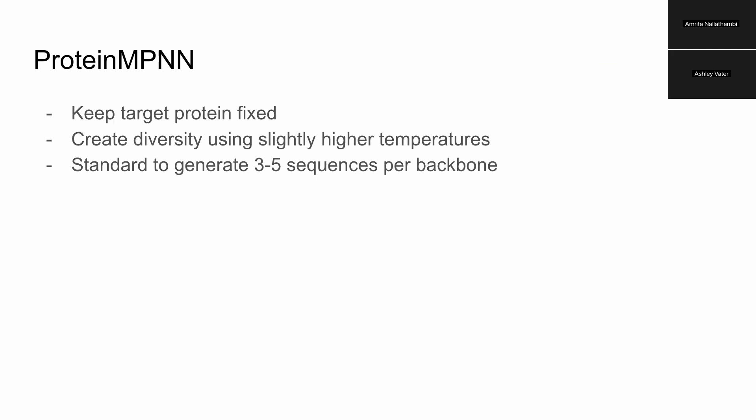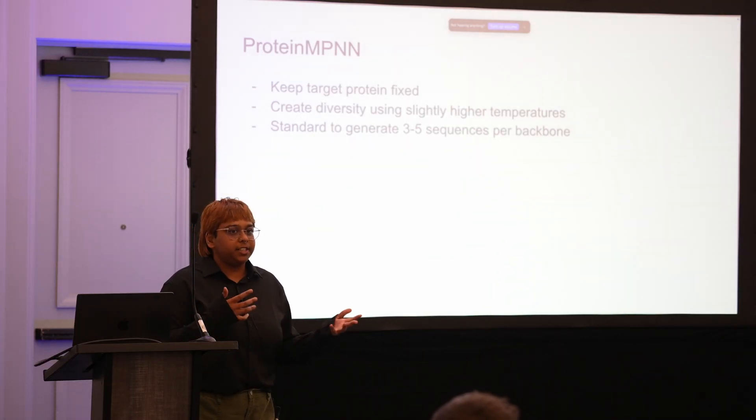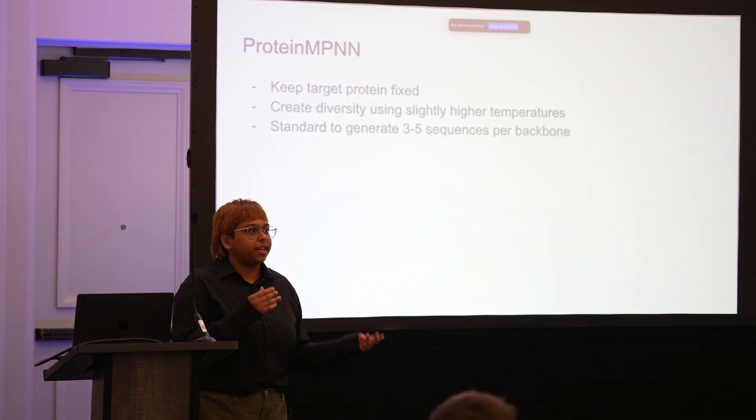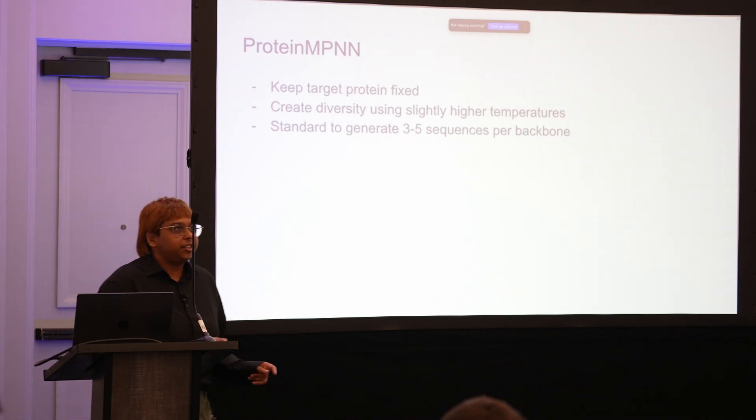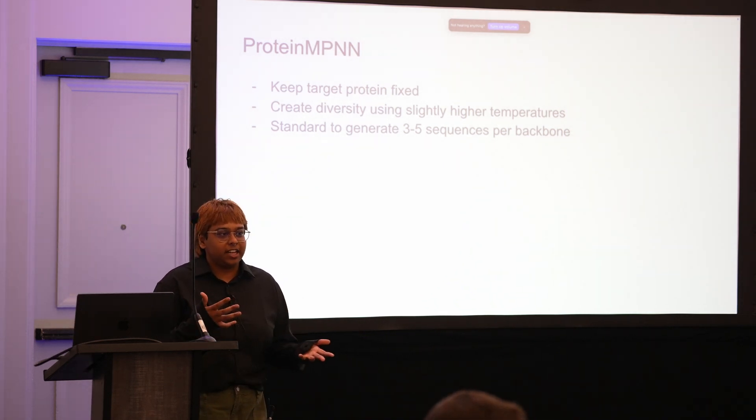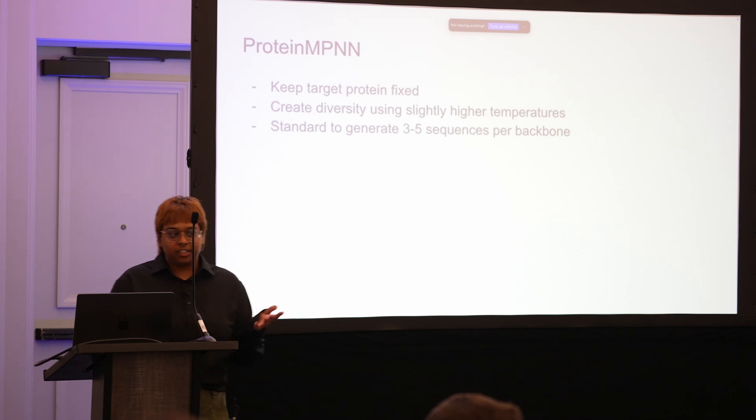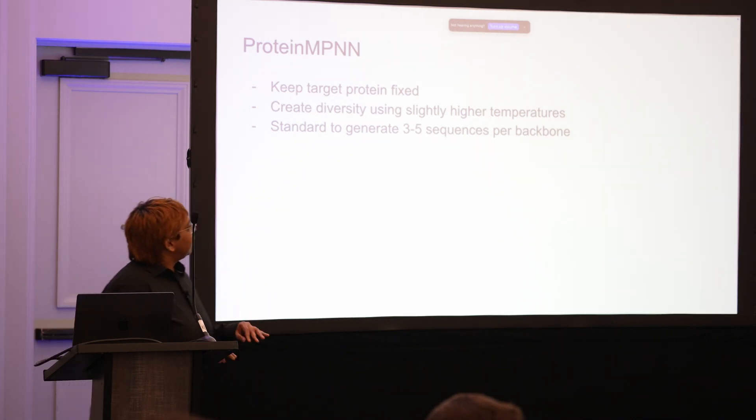People usually tend to generate three to five MPNN sequences for a diffusion backbone and then refold all of these, or you can filter them based on the MPNN scores. I tend to refold all of them because I found that the MPNN scores don't necessarily tell me whether the sequence is actually good or not.